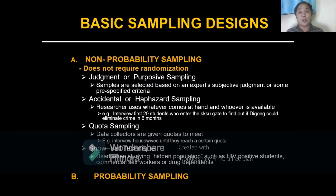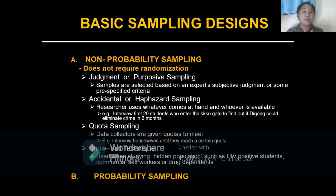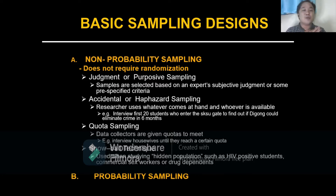The third one is quota sampling, meaning the data collectors are given quotas to meet. An example of quota sampling is interviewing housewives until they reach a certain quota. The last non-probability type is the snowball technique, which is used when studying hidden populations.